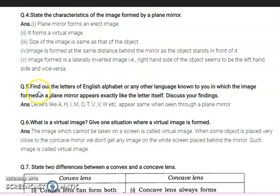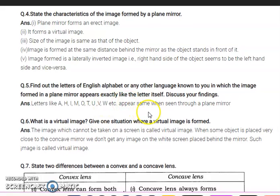Now your question number five. Find out the letter of the English alphabet or any other language known to you in which the image formed in a plane mirror appears exactly like the letter itself. You have to find those letters from the English alphabet which follow the plain mirror case. Discuss your findings. You will see that A, H, I, M, O, T, U, V, W - all these are letters whose left and right are equal. So all these give the correct image in the case of plane mirror.